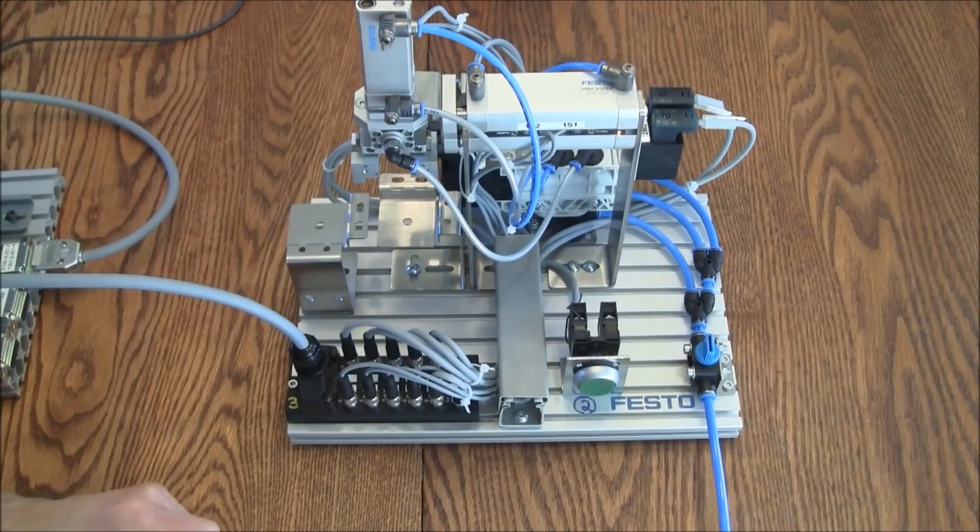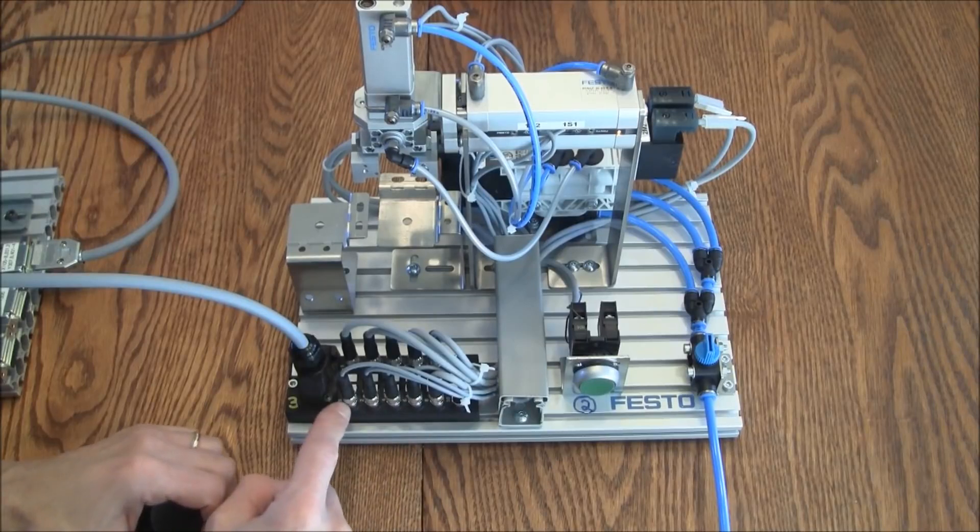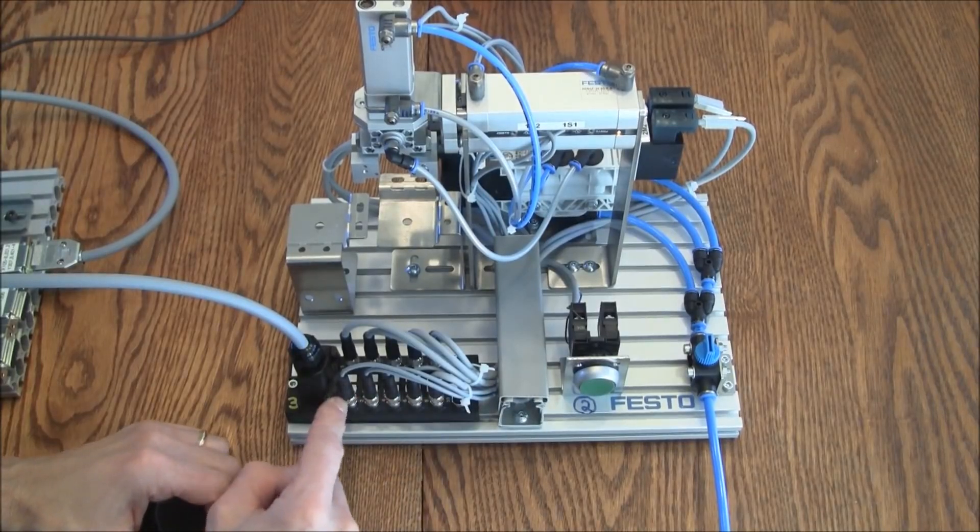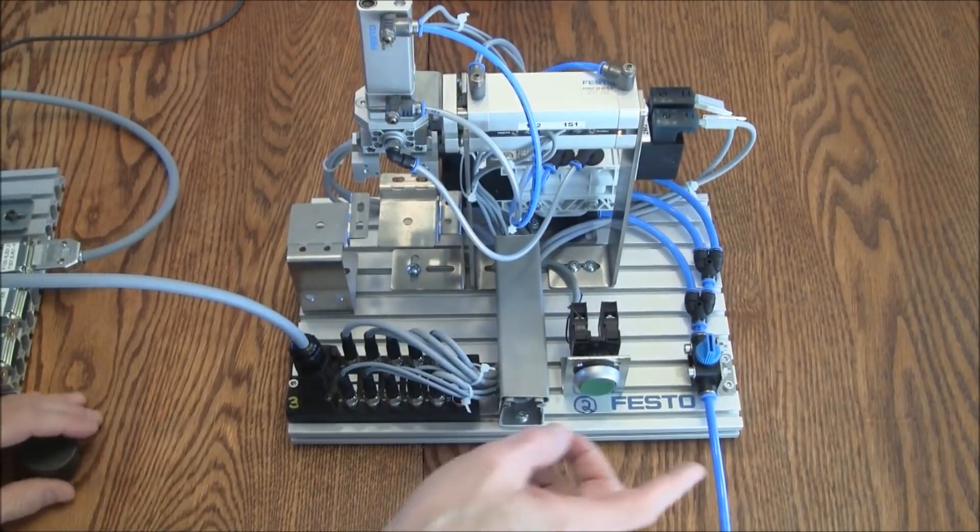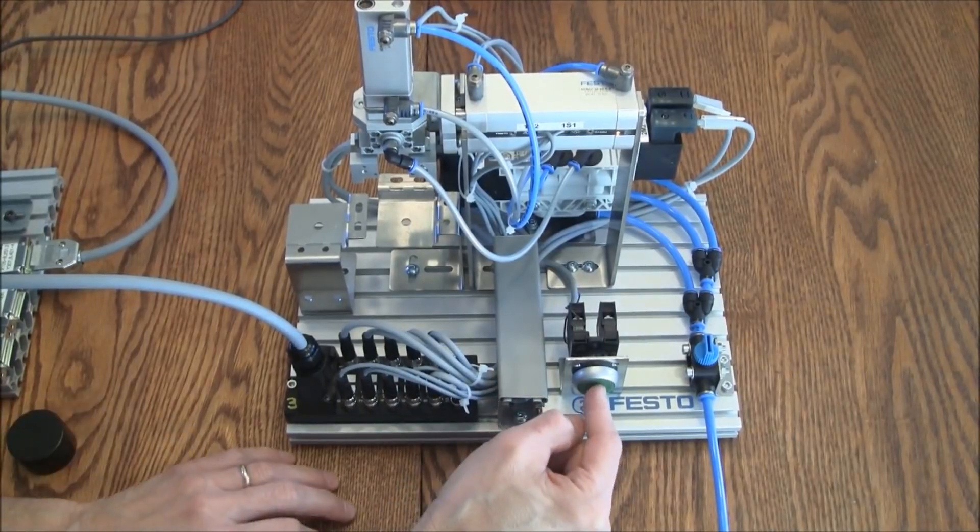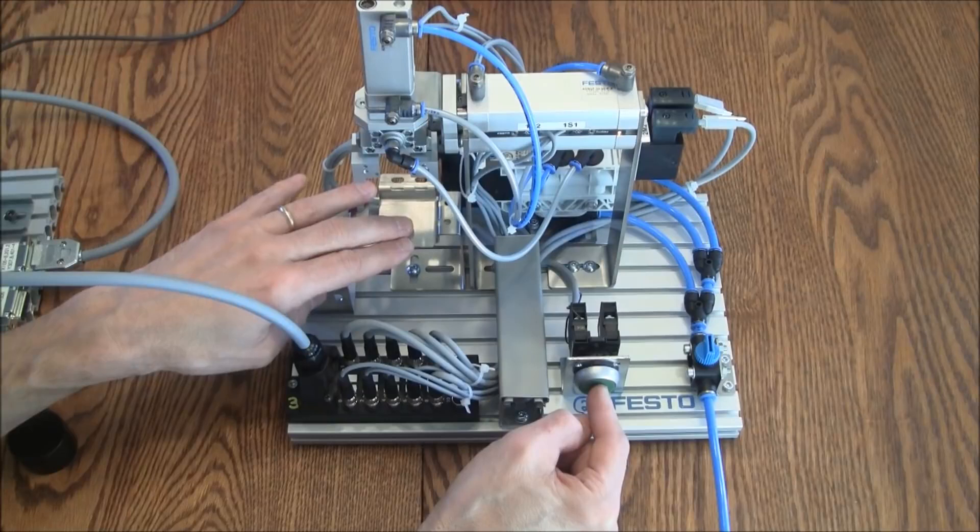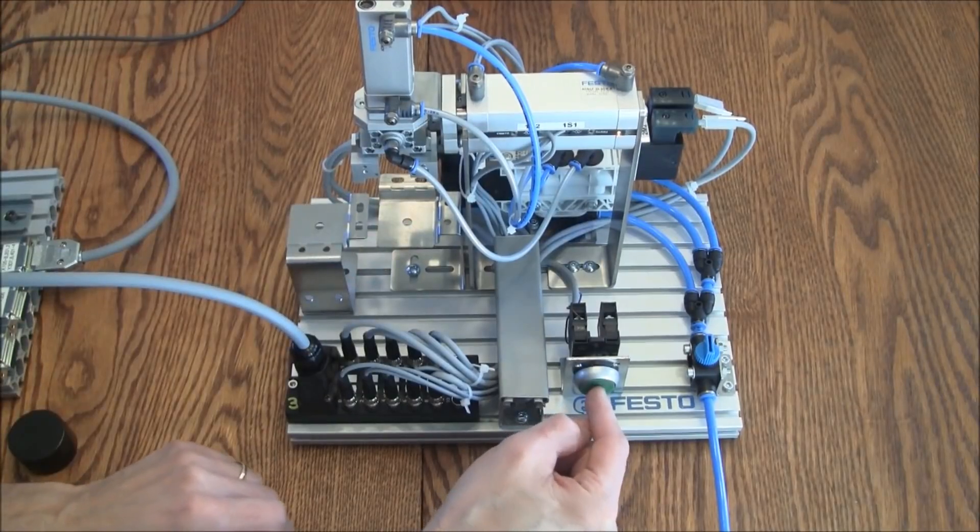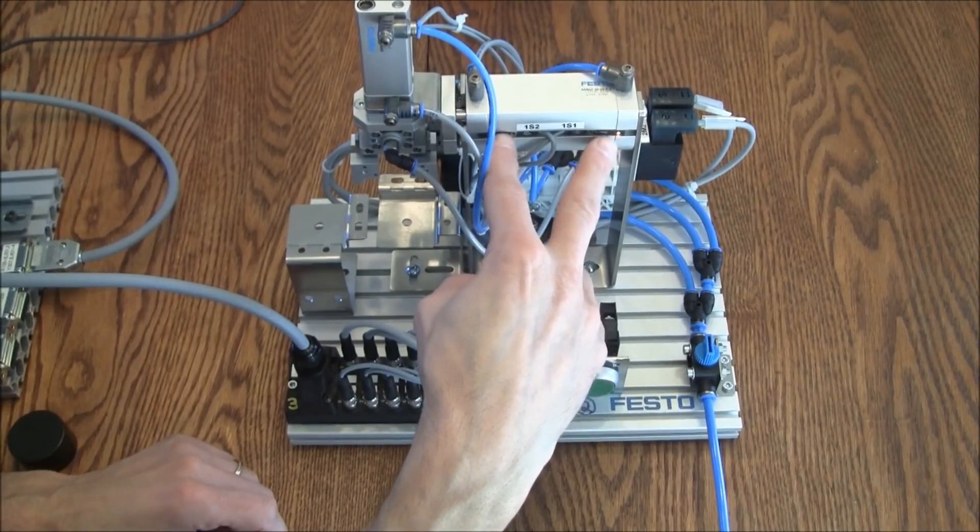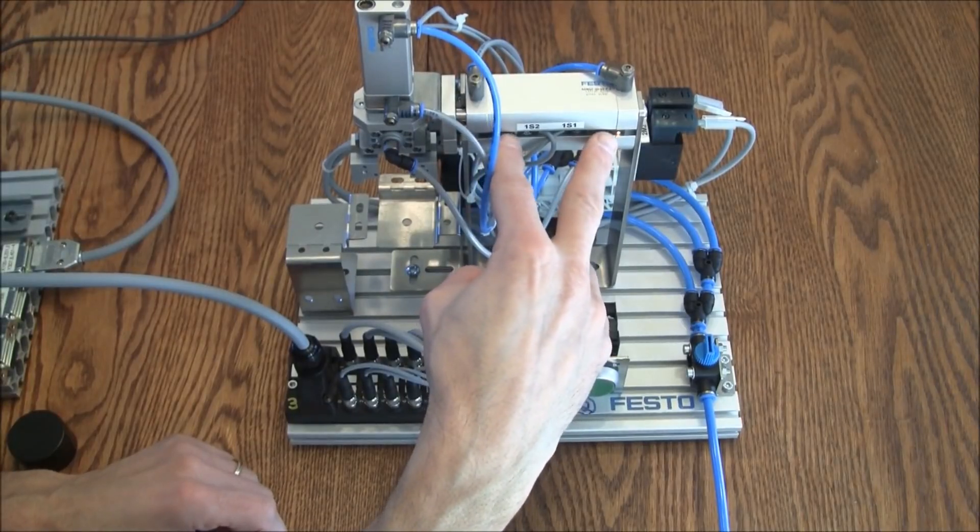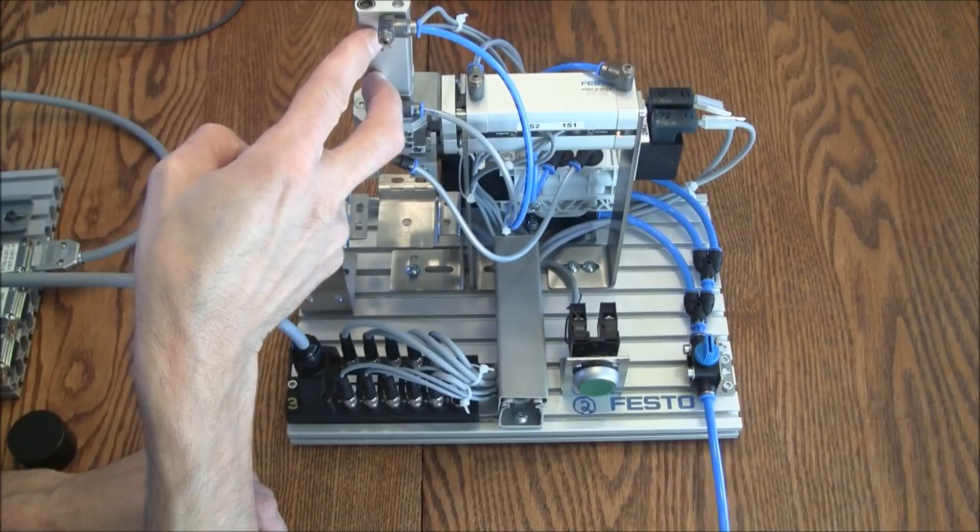So let's take a little bit closer look at the Mechlab here. We have the I/O block and with that I/O block we have five inputs and five outputs. The inputs are the push button to signal the start of the cycle and then we have four positional sensors on two of the cylinders.